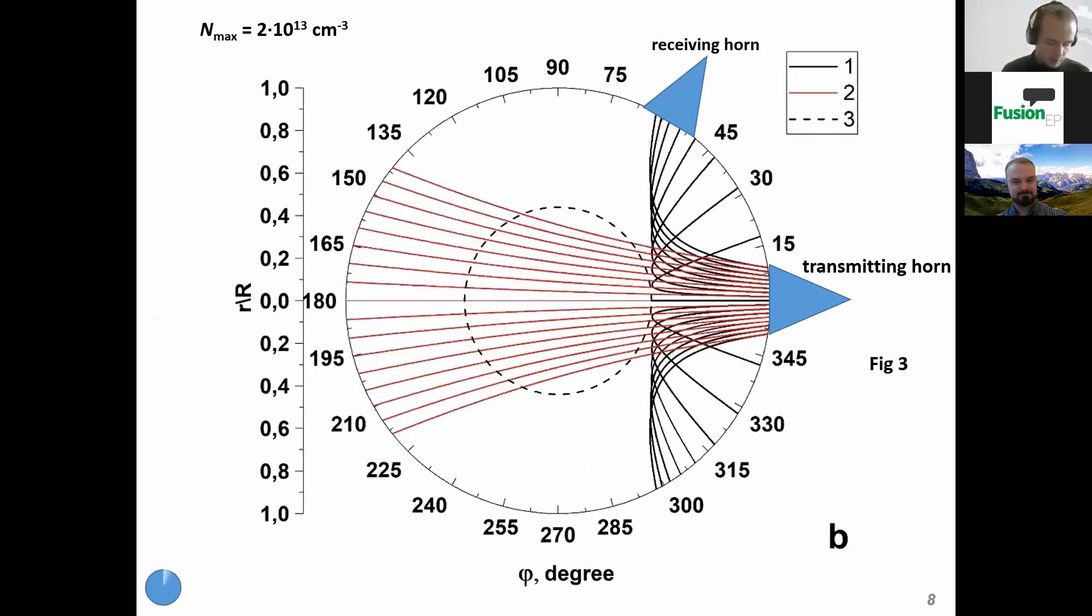In the second case, when the plasma density is higher, we see that the plasma is transparent for the signal at 71 GHz and not transparent for the signal at 37 GHz. The signal at 37 GHz due to the refraction and reflection from the critical layer is received by the horn antenna.